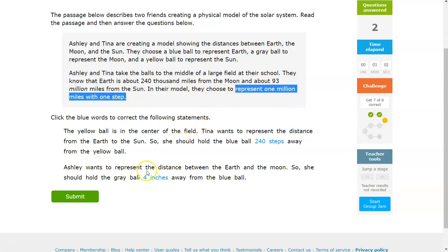Right here, it talks about how she wants to represent the distance between the Earth and the Moon. So she should hold the gray ball four inches away from the blue ball or it says four steps away from the blue ball.